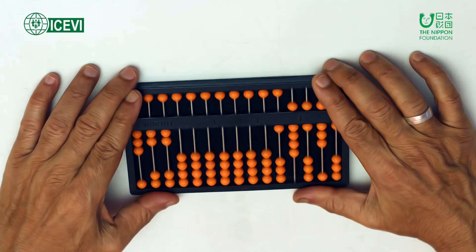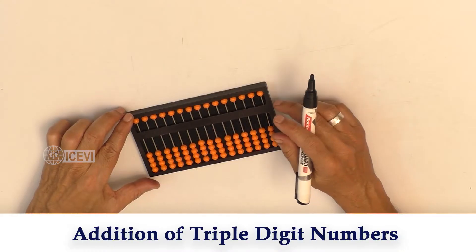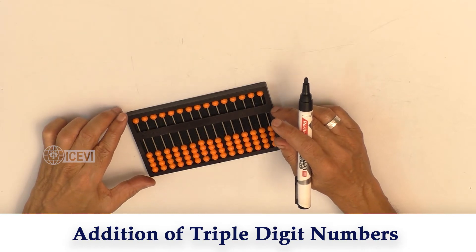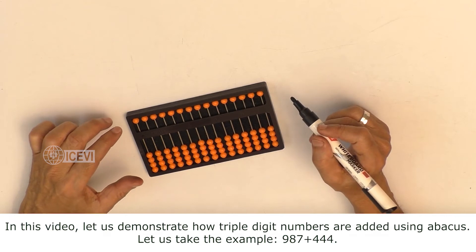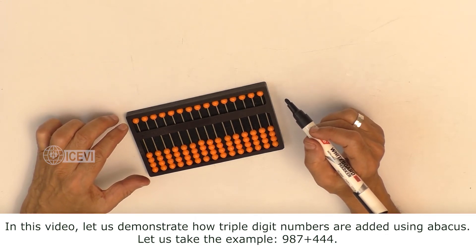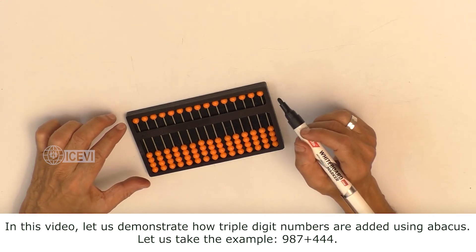The I.C.E.V.I. and The Nippon Foundation present Mathematics Package for Teachers, video series: Abacus as a Mathematical Tool. Title of the video: Addition of Triple Digit Numbers. In this video, let us demonstrate how triple digit numbers are added using abacus.